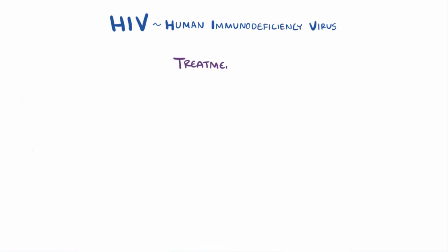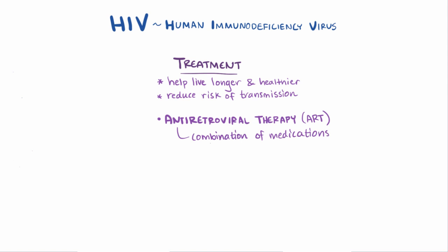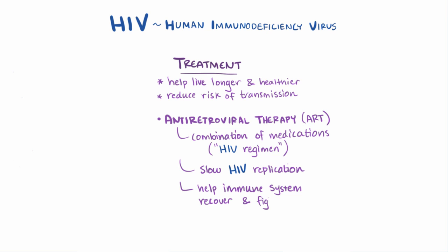There's currently no cure for AIDS. Treatment, however, can help somebody with AIDS live longer, healthier lives and help reduce the risk of transmission. The primary method is to use antiretroviral therapy, or ART. ART isn't a single medicine, but a combination of medicines known as an HIV regimen. These help slow down HIV replication, which gives the immune system a chance to recover and help fight off other infections more effectively.